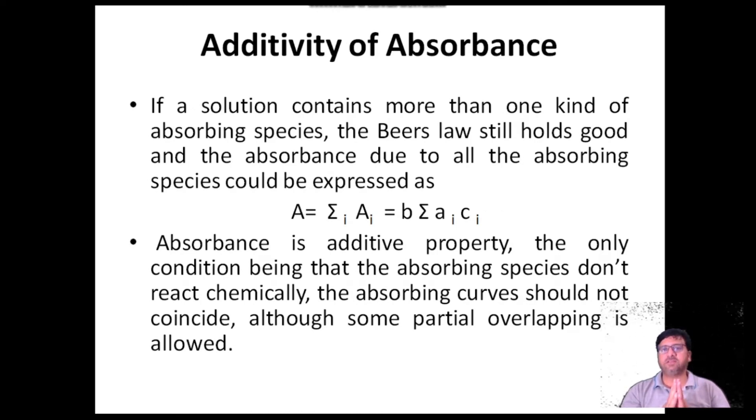Additivity of absorbance: If a solution contains more than one kind of absorbing species, Beer's law still holds good and the absorbance due to all the absorbing species could be expressed as A = Σ Ai = b Σ ai ci. Absorbance is an additive property, the only condition being that the absorbing species don't react chemically. The absorbing curves should not coincide, although some partial overlapping is allowed.